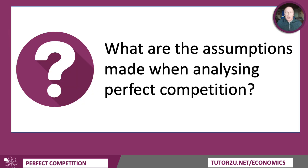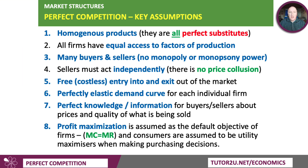When we look at perfect competition, we're thinking about key assumptions — the building blocks of the market. First of all, the products are homogenous; they're all perfect substitutes, they're the same, so each supplier in the market is making a standardised product. Secondly, all firms have equal access to scarce factors of production: land, labour, capital and technology.